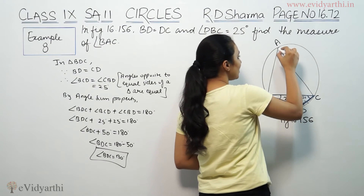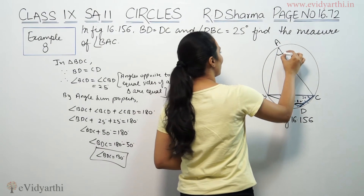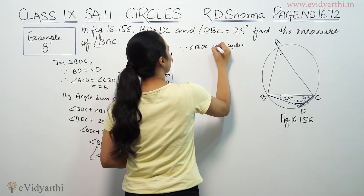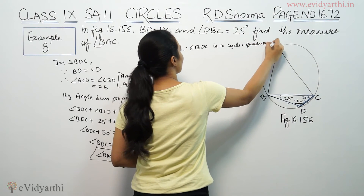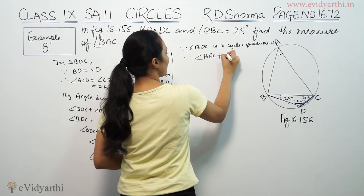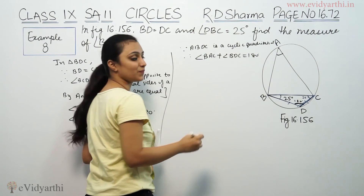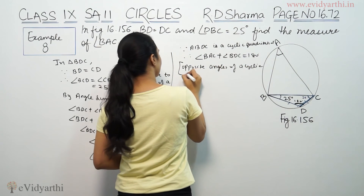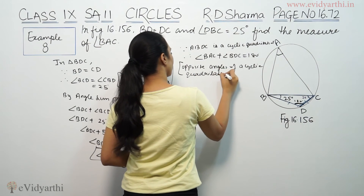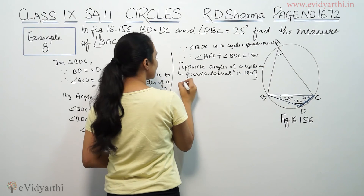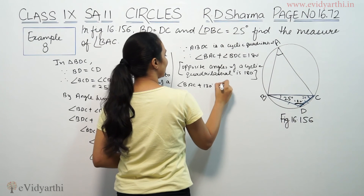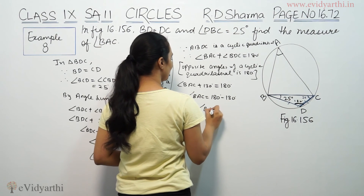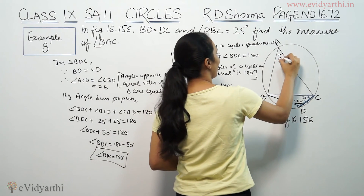Since ABDC is a cyclic quadrilateral, therefore angle BAC plus angle BDC is equal to 180 degrees. So angle BAC is equal to 180 degrees minus 130 degrees, which gives angle BAC equal to 50 degrees.